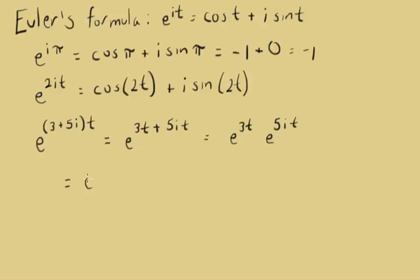Now, when we do this, we're not going to do anything with the e to the 3t. We're going to leave that out in front. But we are going to rewrite what we have here. So, that's going to be cosine of 5t plus i times the sine of 5t.